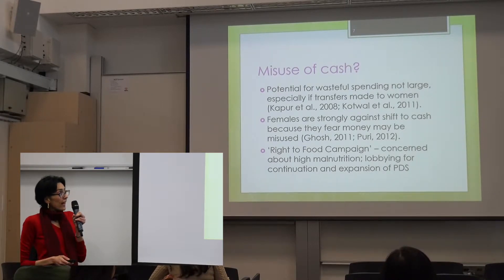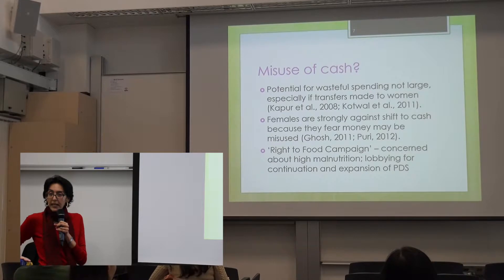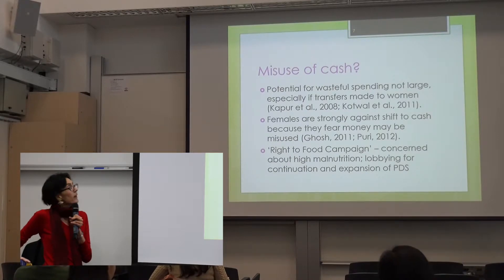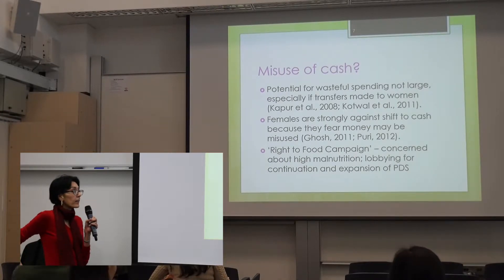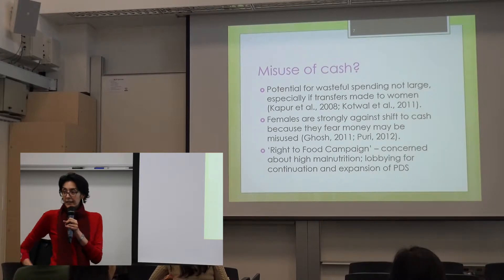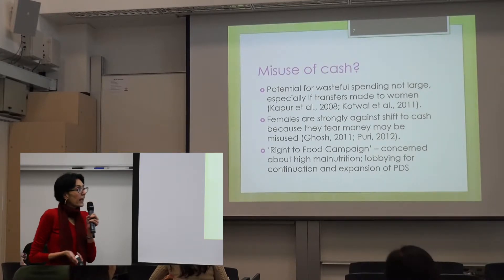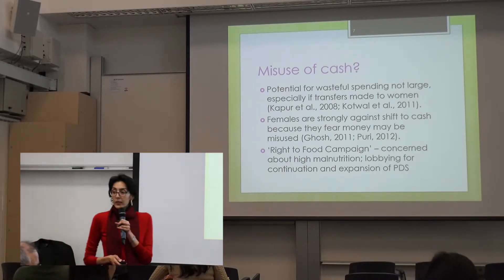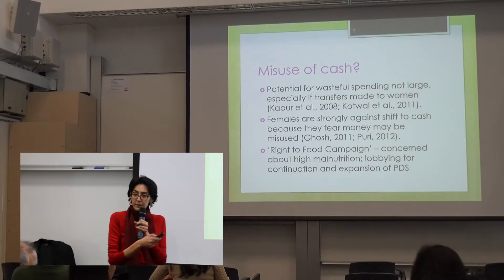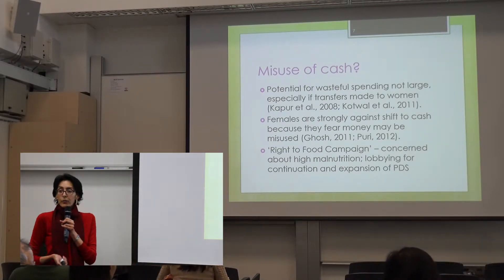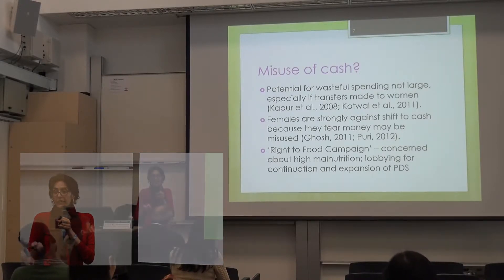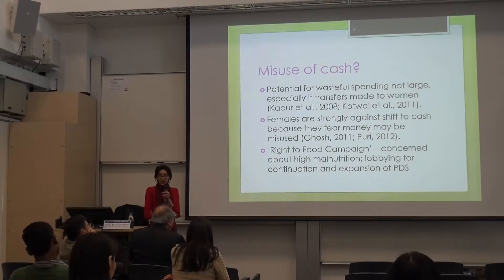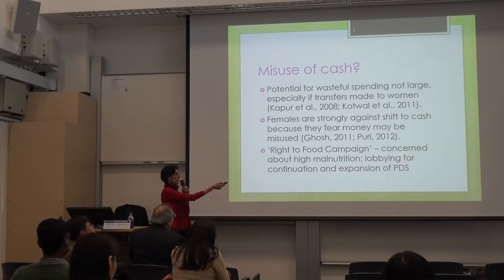There has actually been an activist campaign led by NGOs called the Right to Food campaign. They're generally concerned about malnutrition in India and are strongly against the shift to cash transfers, lobbying for both the continuation and actually the expansion of the PDS to include not just rice and wheat, but protein-rich things like pulses and cooking oil as well.